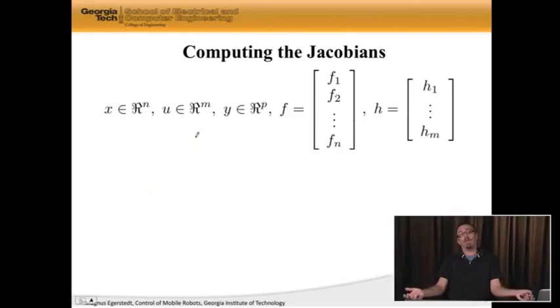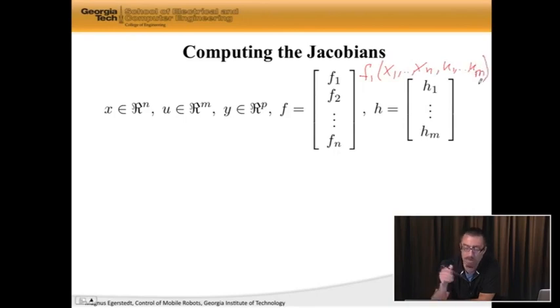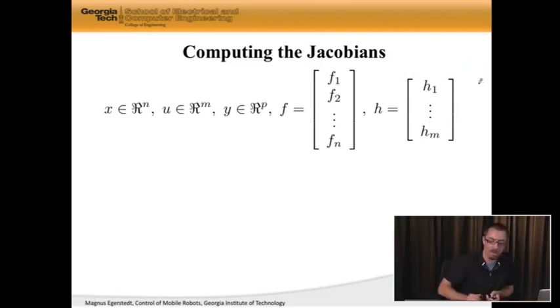Well, let's actually do some computations here just to know what's going on. So let's assume that x is in R^n, u is in R^m, y is in R^p, and we have f and h being given by these things, where really what we have is f_1 of x, or is actually a function of x_1 to x_n and u_1 to u_m. So when I just write f_1, that's what I really mean.